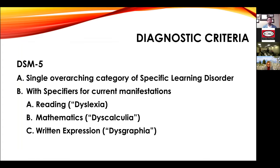From a clinical perspective, the DSM-5 was designed to allow for more learning disorder diagnoses. In the DSM-5, there is a single overarching category of specific learning disability with specifiers for current manifestations. The DSM-5 specifies specific learning disorder with impairment in reading — we call that dyslexia — which is the neurological term we use for deficits in reading.